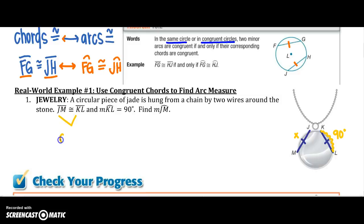Well, because their chords are congruent, I know that their corresponding arcs are congruent. So the measure of KL arc is going to be equal to the measure of JM's arc. So the measure of JM is going to be 90 degrees.